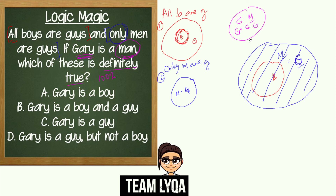What does that mean for the diagram? Gary can be placed here — Gary is a man is still correct. Since man si Gary, he could also be in the overlapping region of B, M, and G. Either position can be true. We're not sure exactly where he is because nothing else was specified. It wasn't said that Gary is a boy, so we have partial possibilities: he's either M and G, or B, M, and G.